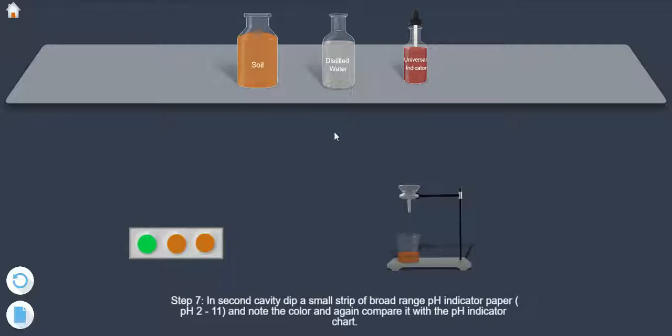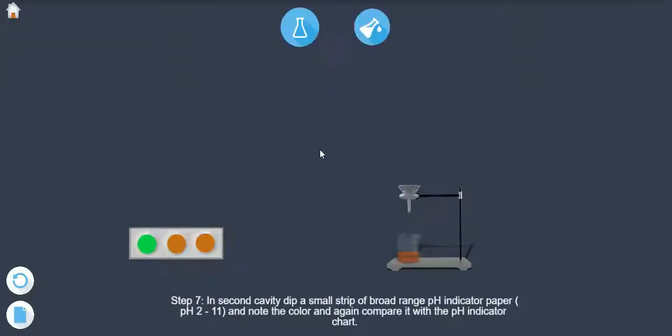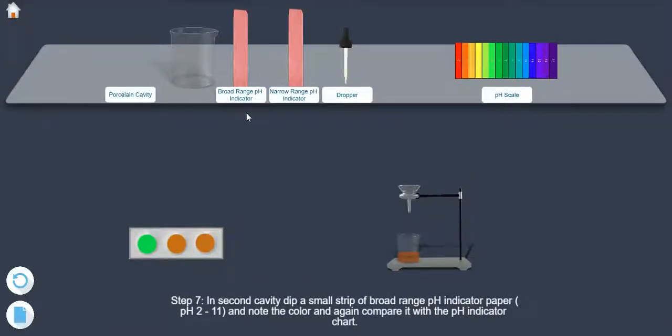Step 7: In the second cavity, dip a small strip of broad range pH indicator paper (pH 2 to 11), and note the color and again compare it with a pH indicator chart.